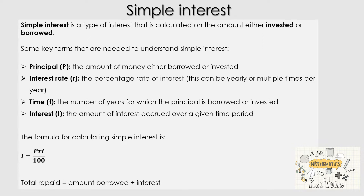The interest rate, represented by a lowercase r, is the percentage rate of interest. It's important to note this is often yearly, but in some cases it will be multiple times per year. Time, represented by lowercase t, is the number of years for which the principal is borrowed or invested — essentially, how long the loan or investment lasts. Interest, represented by capital I, is the amount of interest accrued over a given time period. The formula for calculating simple interest is I = PRT ÷ 100.